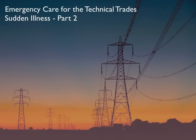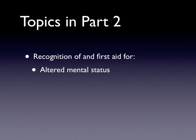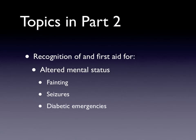Welcome to Part 2 of Sudden Illness. The topics we'll cover in Part 2 are Altered Mental Status, and these will have three subsets. All three of these things lead to Altered Mental Status: Fainting, Seizures, and Diabetic Emergencies.